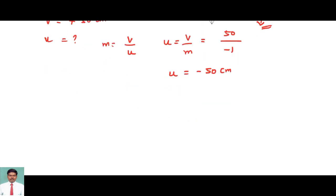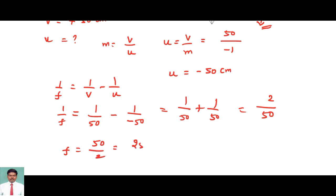If we try to do it with the help of the lens formula, 1 by F will be equal to 1 by V minus 1 by U. So the V value is equal to 50 and U value is minus 50. So we are getting 1 by 50 plus 1 by 50. If we take 50 as common, it is 2 by 50. So 1 by F value will be equal to 2 by 50. Therefore, F value will be equal to 50 by 2, which equals 25 cm.